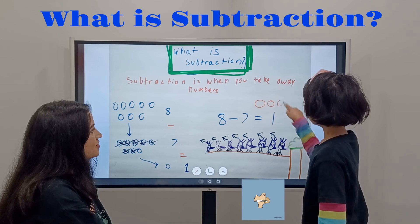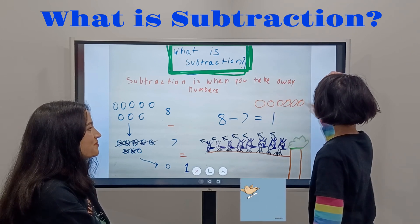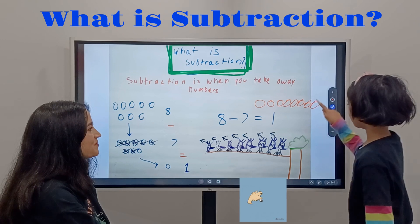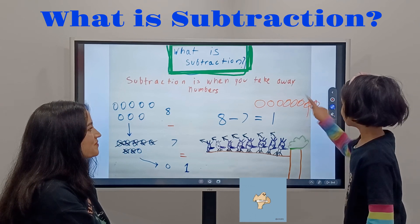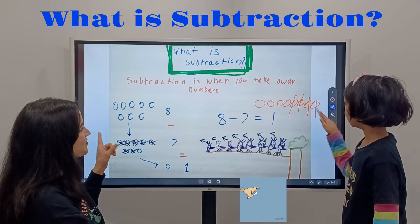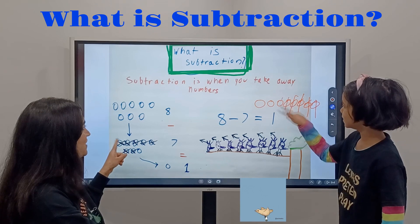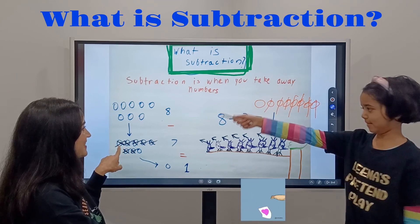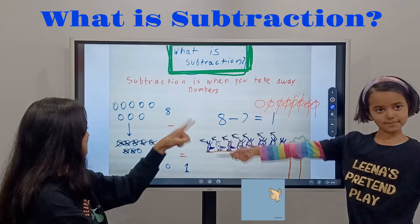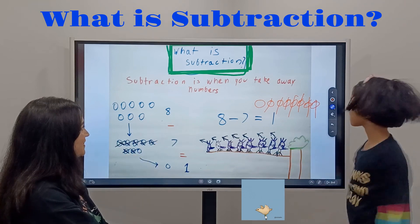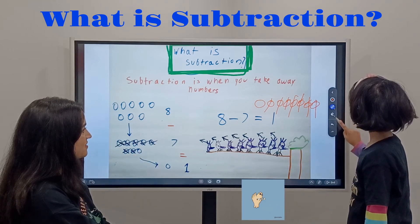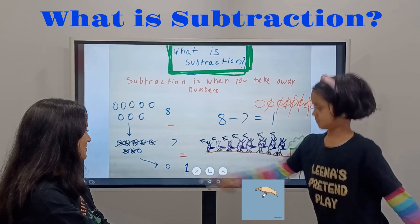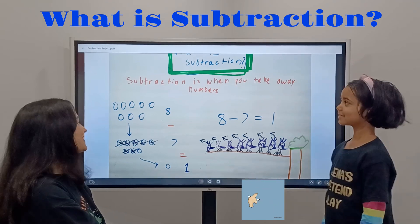One, two, three, four. And then I take away, right? Actually, Lina, you are doing the math way. I know, I do the math way. Eight minus seven equals one. Good. Next.